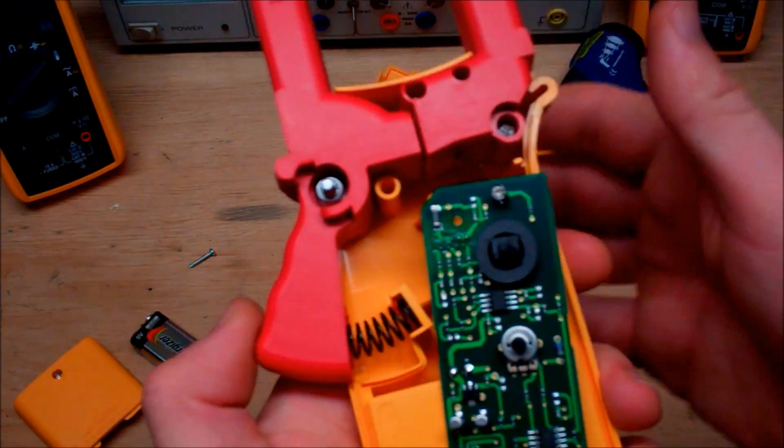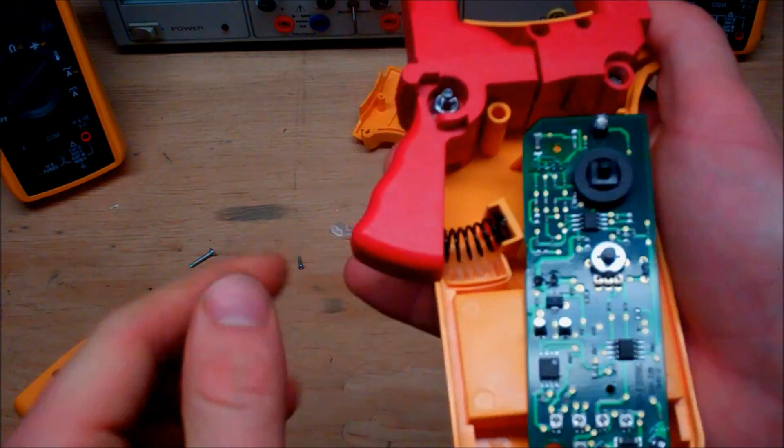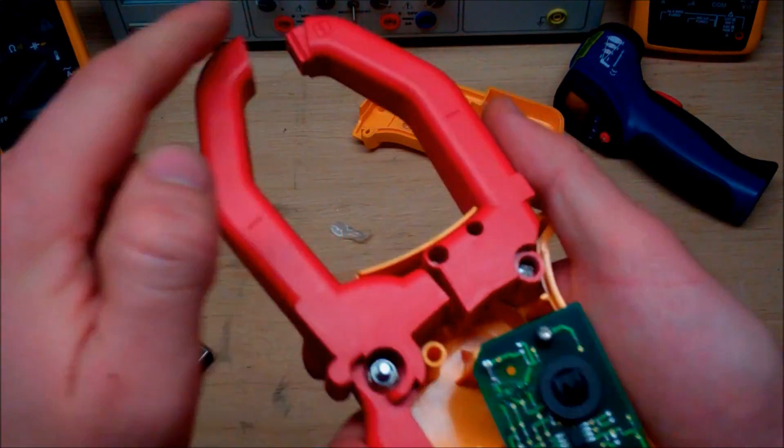Now mechanically, the current transformer here is really simplistic. As you can see it's just got a spring to push it back and maintain that pressure up here.